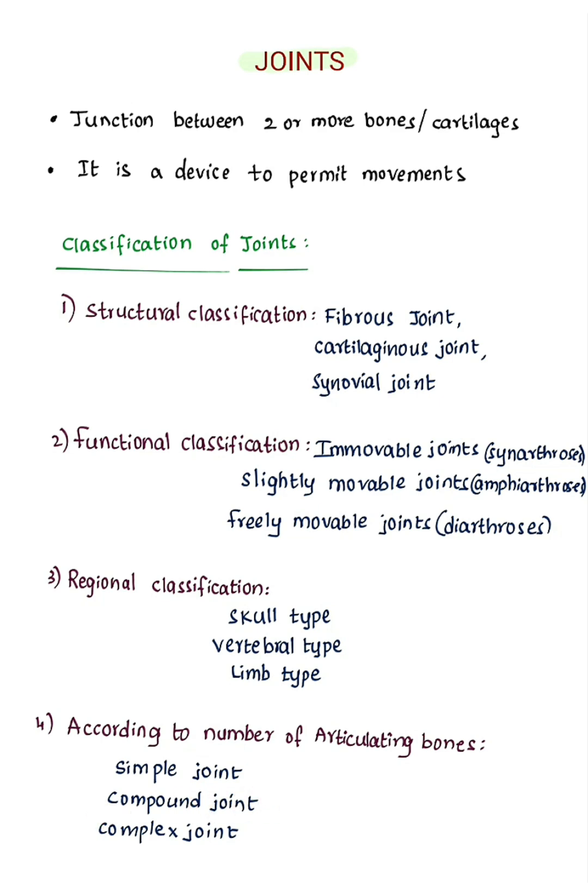A compound joint is when more than two bones articulate — example: elbow joint, where the radius, ulna, and humerus articulate. A complex joint is one where the joint cavity is divided by an intraarticular disc — example: temporomandibular joint.